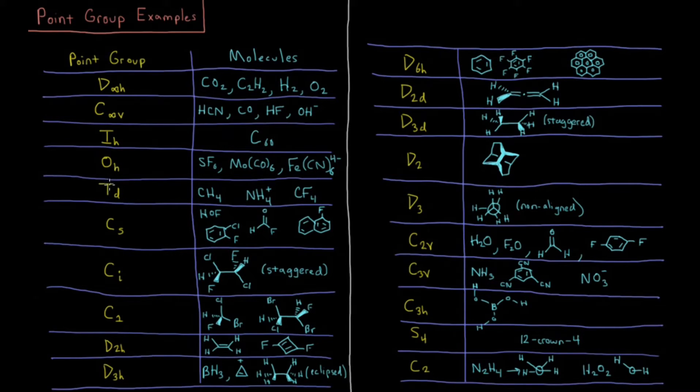Tetrahedral, TD, perfect tetrahedron is a TD group. Methane, ammonium, CF4, and the like.